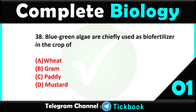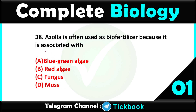Question thirty-seven: blue-green algae are chiefly used as a bio fertilizer in the crop of — option number A, wheat, is the right answer. Question thirty-eight: Azolla is often used as a bio fertilizer because it is associated with — option number A, blue-green algae.